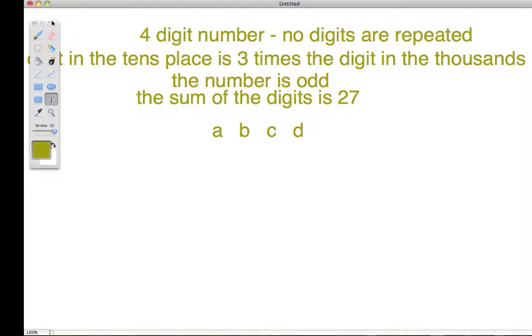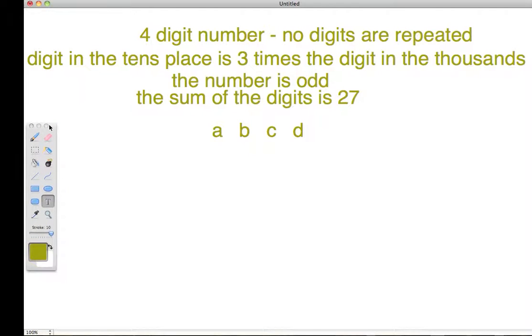Now, let me say that the digit in the tens place is 3 times the digit in the thousands place. If the digit in the thousands place were 1, that would make the digit here 3. If the digit here were 2, it would make the digit here 6. And if the digit here were 3, it makes the digit here 9. If the digit here were 4, because 3 times 4 is 12, that doesn't work. So, this digit must be 1, 2, or 3.